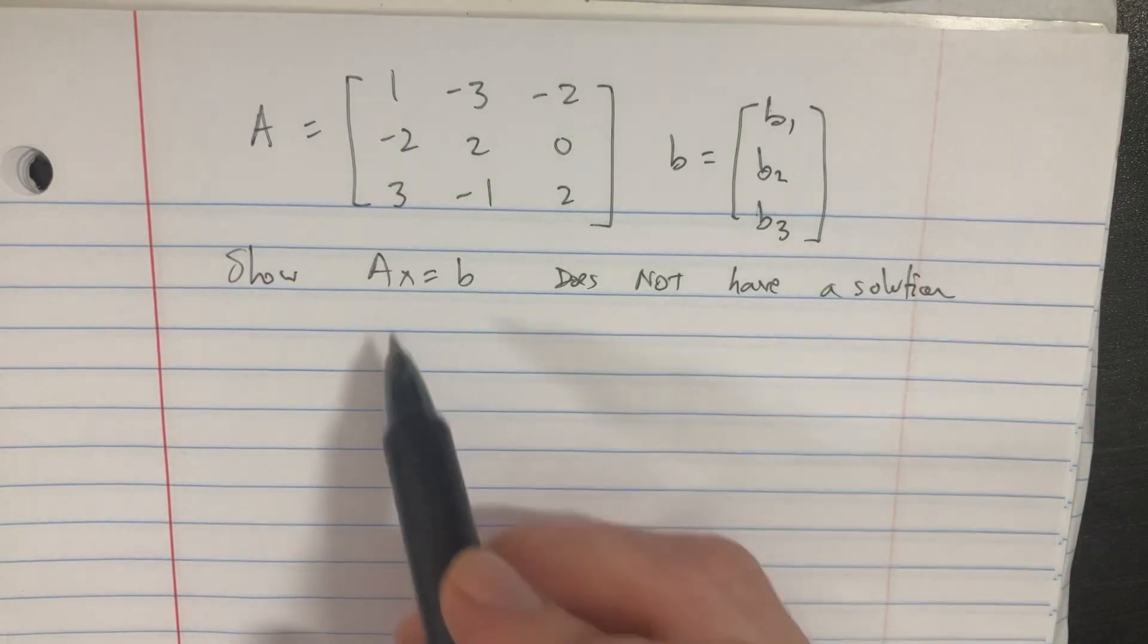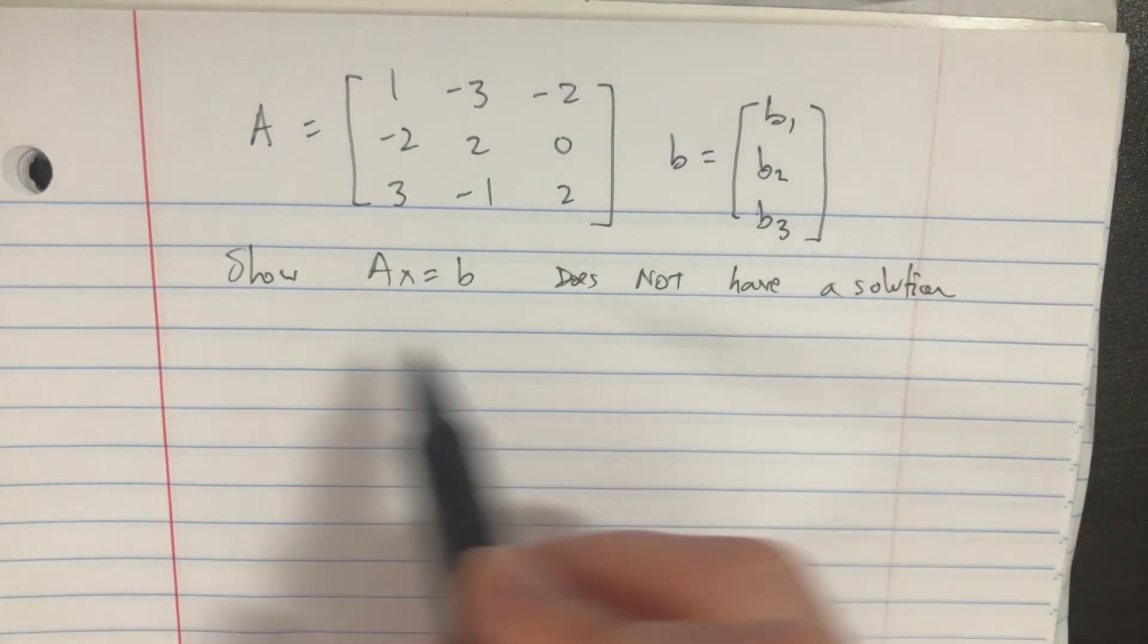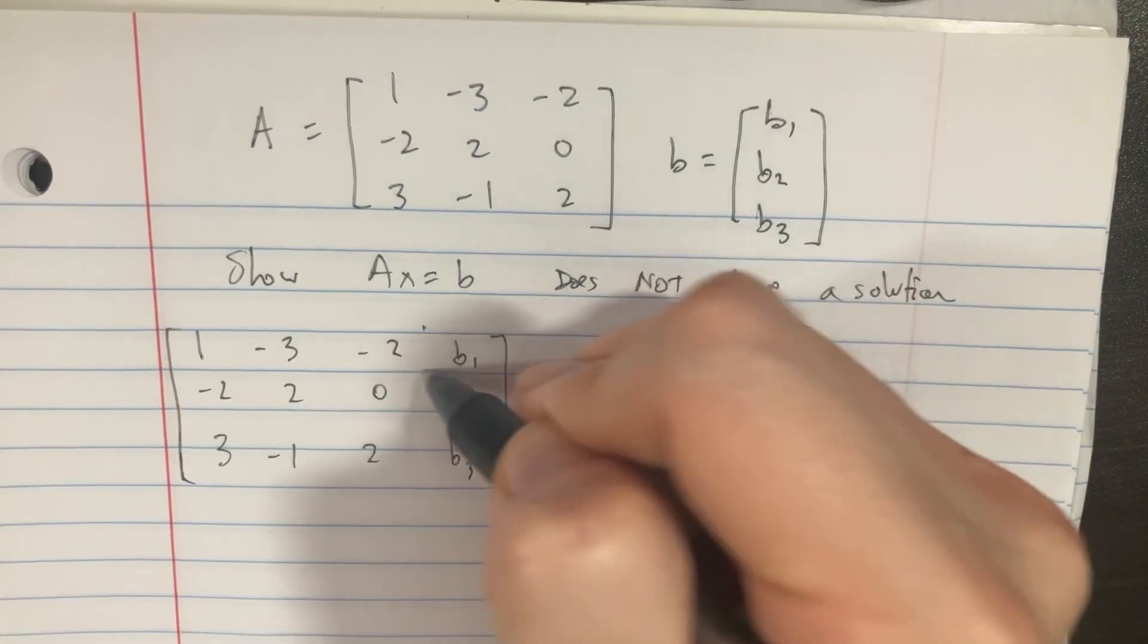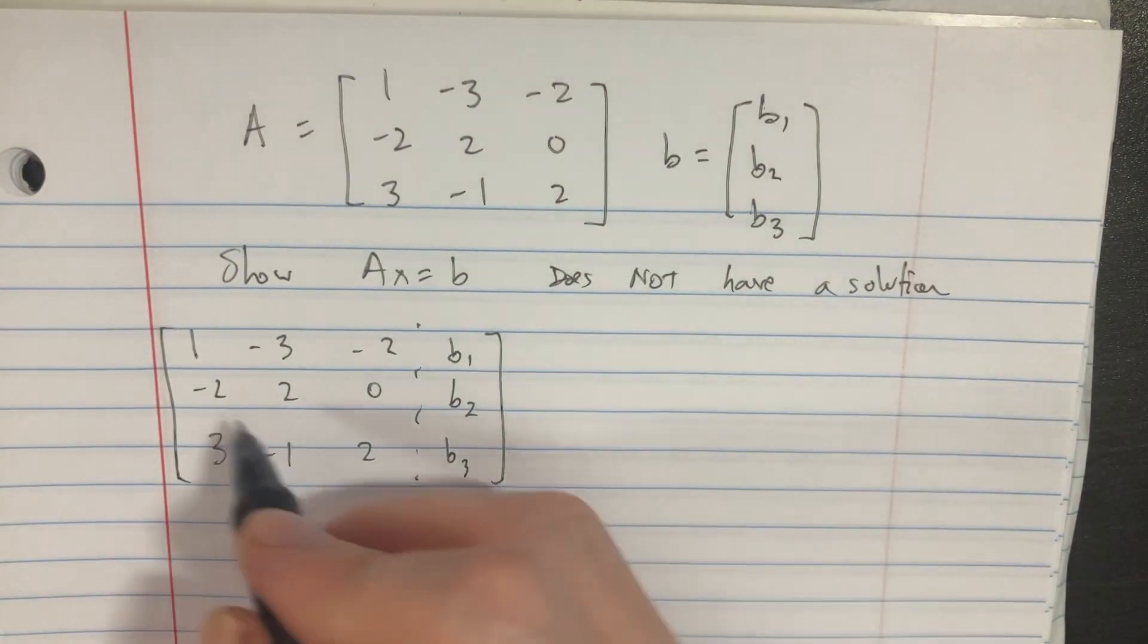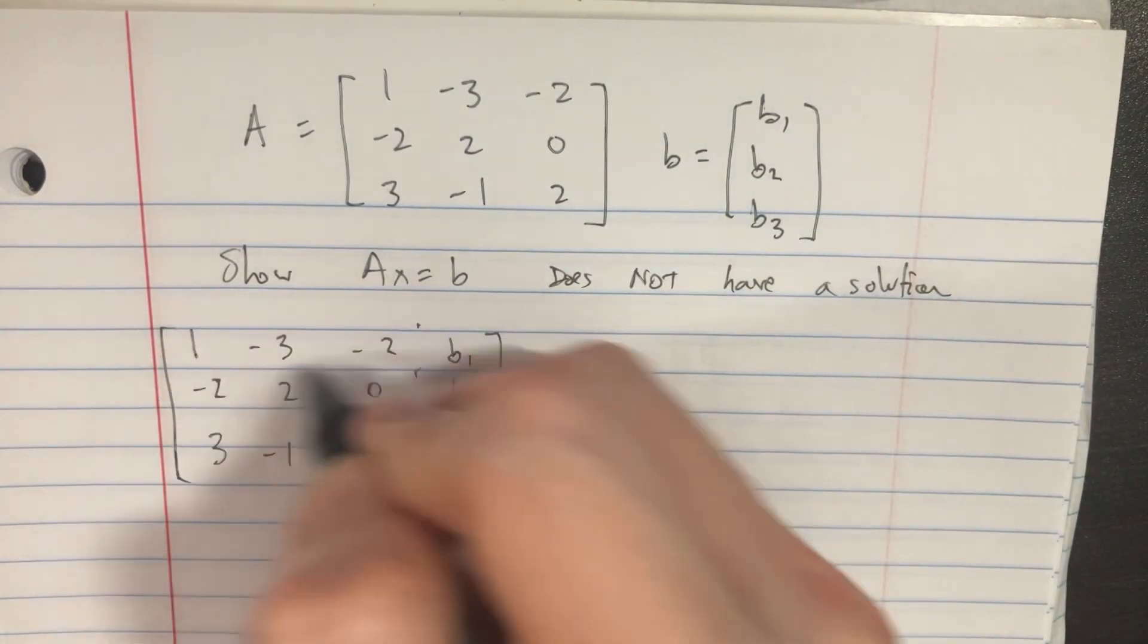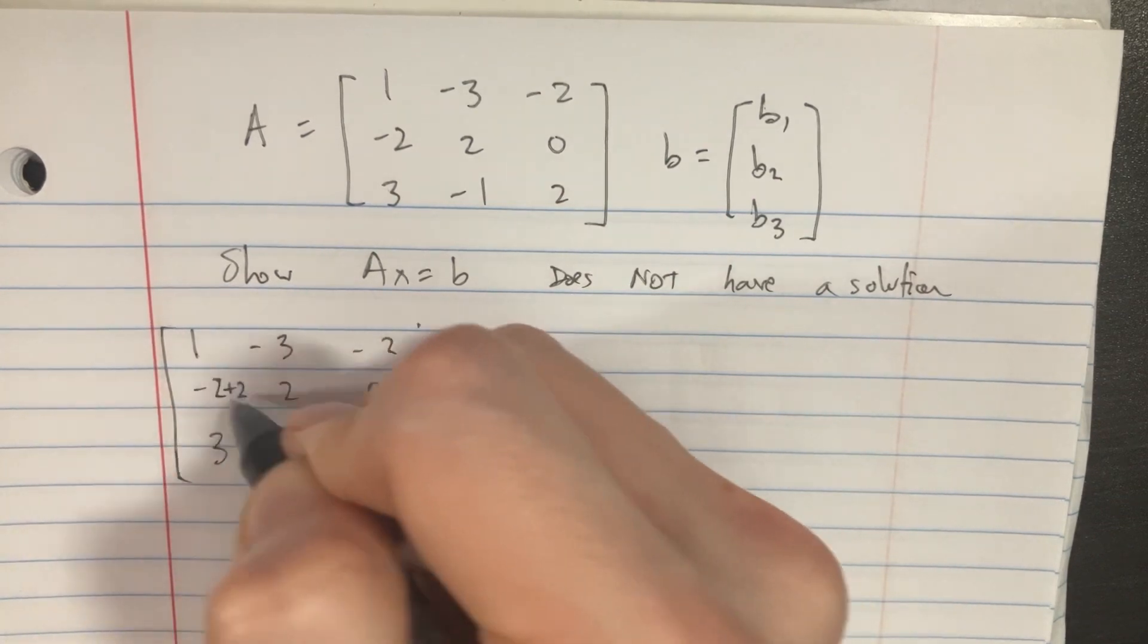We're trying to show that the equation Ax equals b does not have a solution for these two matrices. So we're just trying to solve this, and let's go ahead and multiply this top row by 2 and add it to this one.